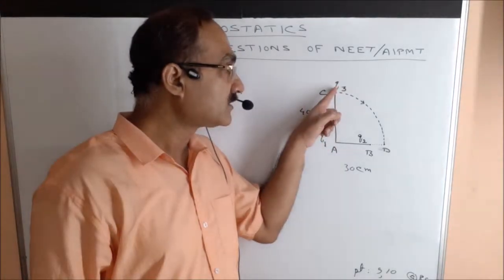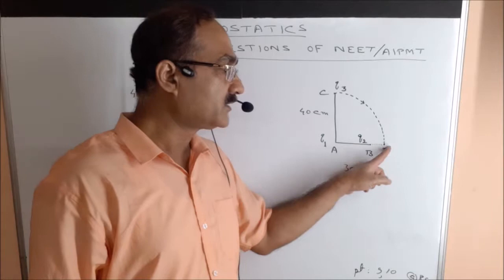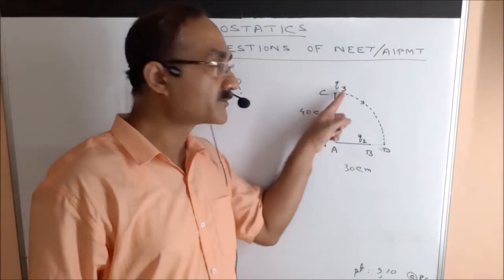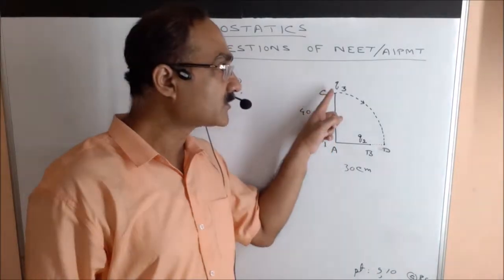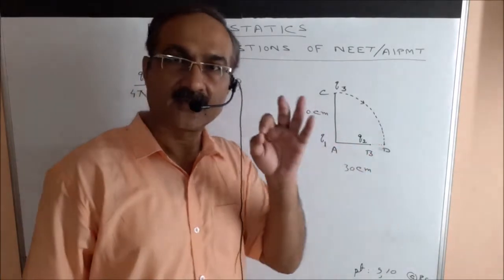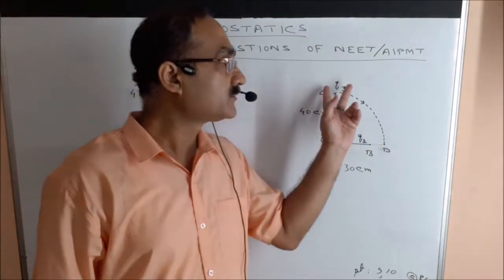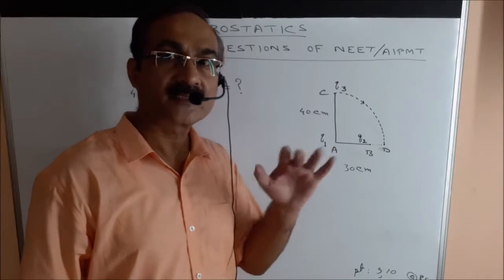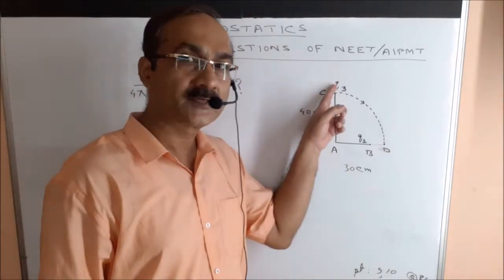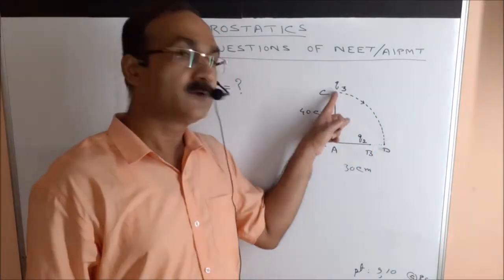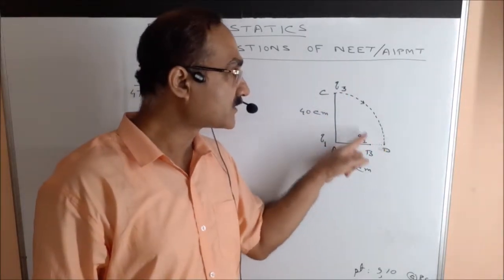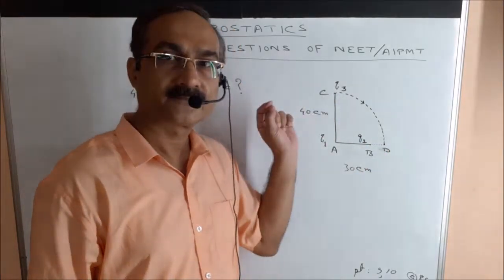Note that Q3 is at a distance of 40 cm from Q1, and at point D it is also at a distance of 40 cm because it moves along a circular arc. That means the potential energy of Q3 due to Q1 remains constant whether Q3 is at position C or D. However, the potential energy of Q3 due to Q2 at C will be different from that at D, because those distances differ — one is shorter, one is longer.